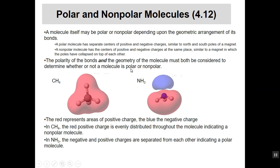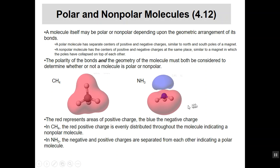We can talk about whether a bond is polar, but we can also expand that to talk about molecules. A molecule can be polar or nonpolar even though it has polar bonds in it. For example, methane (CH4) has a uniform electron cloud around the central carbon with four hydrogens pulled equally at the corners of a tetrahedral geometry — it's a nonpolar molecule. Ammonia has a lone pair of electrons and a trigonal pyramidal shape, so its bond polarities don't cancel out, making it polar.